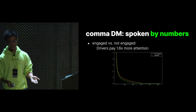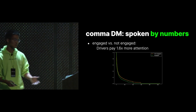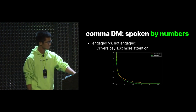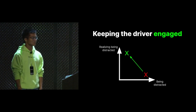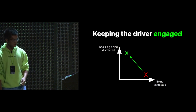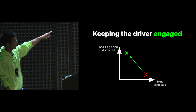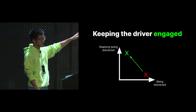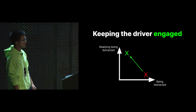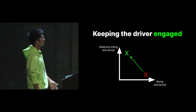Which brings us to this graph. To sum things up, DM basically achieves two things: one, it reminds people when they're getting distracted without them actually knowing they're distracted. The other, more importantly, is that it keeps people from engaging in distracted behaviors in the first place.